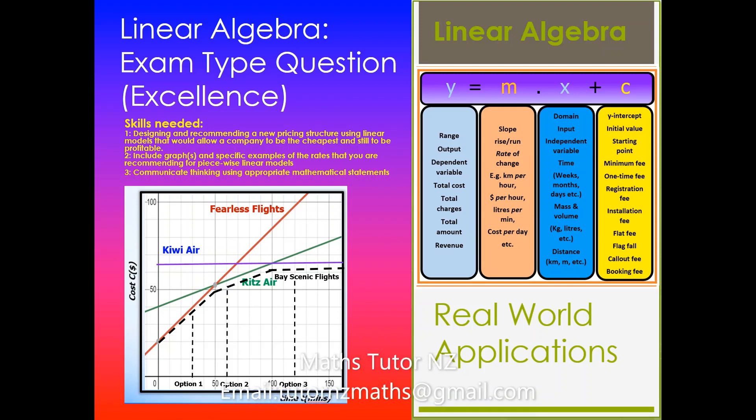Greetings everyone. In this video I will be going over an exam type question on linear algebra. The focus of the video will be looking at the excellence criteria. Some of the skills you will need for excellence for this achievement standard is designing and recommending a new pricing structure using linear models that would allow a company to be the cheapest and still to be profitable. You will also need to include a graph or graphs and specific examples of the rates that you are recommending for piecewise linear models, and communicate thinking using appropriate mathematical models.